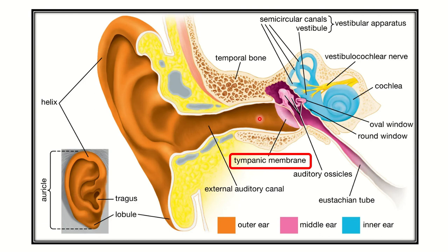Our discussion point is the tympanic membrane. We can see it has two surfaces: the external surface, which lies at the terminal part of the external acoustic meatus or external auditory canal, and the inner part, which lies in the middle ear cavity. In the middle ear cavity, this part is lined by mucous membrane.